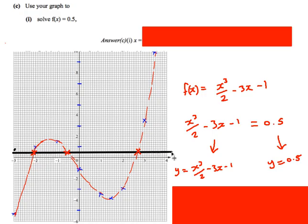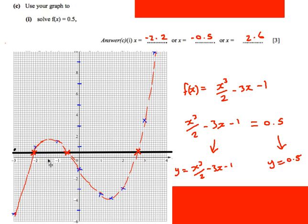So in effect, what we do is we draw the line for y equals 0.5. That's going to be this horizontal line here. And then we solve it. When are these two things equal? Well, they're going to be equal when there's an intersection. So we basically look at this point, this point, and this point. And for each of them, we need to say what is the x value when they intersect. Again, if we read off the graph, we should get something that's around about this. So minus 2.2, around about minus 0.5, and about 2.6. So we have three possible answers. If it had said solve f of x equal to 0, then I'd be looking at this point here, this point here, and this point here. Okay, so that's a typical source of question.